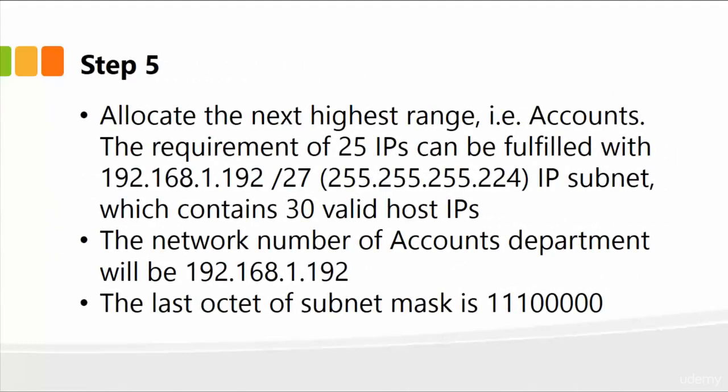Next is step five. We continue on with the next department, which is accounts — the same exact process. All you're doing is borrowing another bit in the last octet of the subnet mask, which is 111 and then five zeros. You can see how we move forward from one department in descending order — we had sales, we had purchase, and now we're in accounts. Accounts has 30 valid host IPs, which satisfies the requirement.